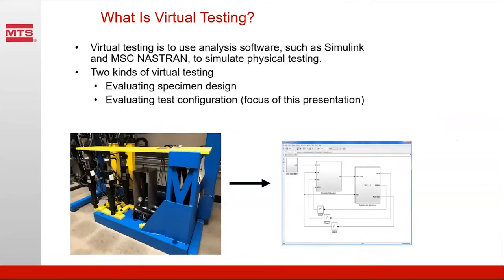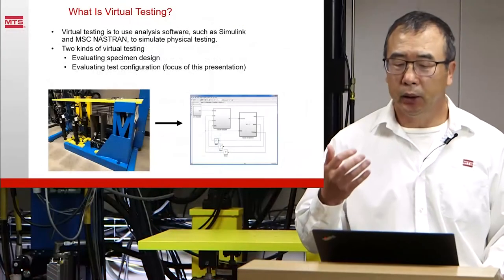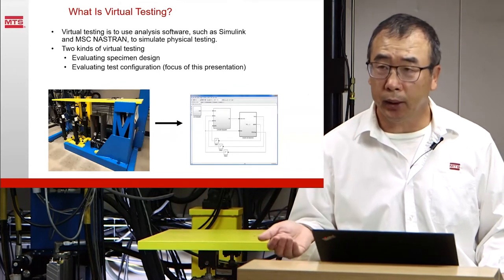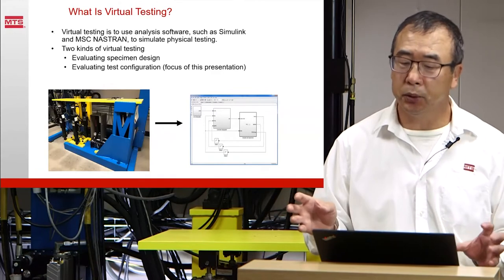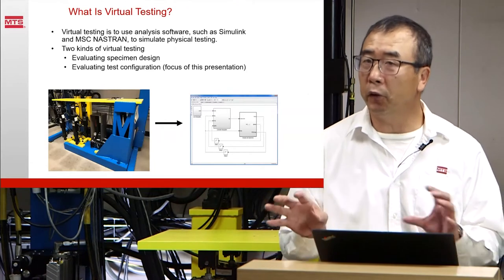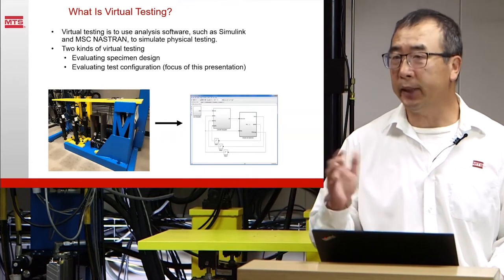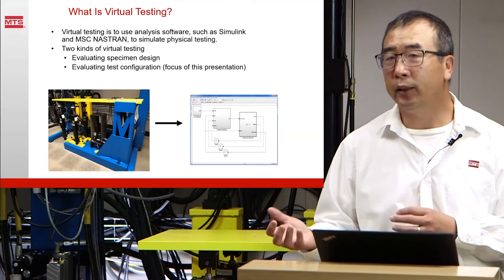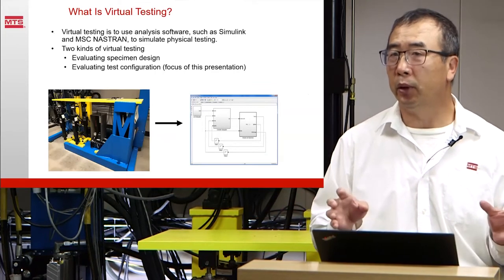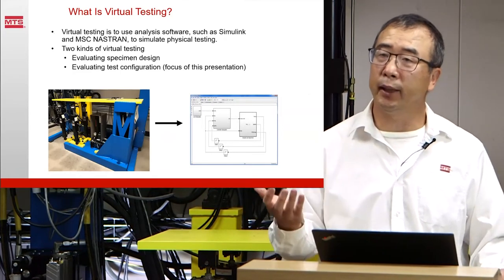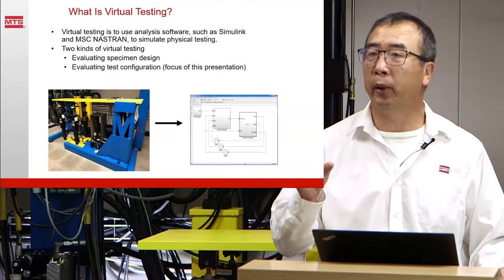So what is virtual testing? By principle it is very simple. It is to use analysis software such as Simulink, MSC Nastran, ANSYS, and other software to simulate physical testing. There are two kinds of virtual testing. One kind focuses on the specimen — how you design the specimen, how you design an airplane wing, where you put the strong material, and where the material should be thin. That kind of virtual testing helps you come up with a specimen design.